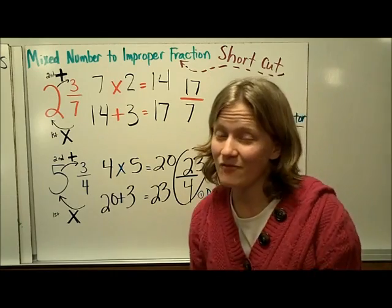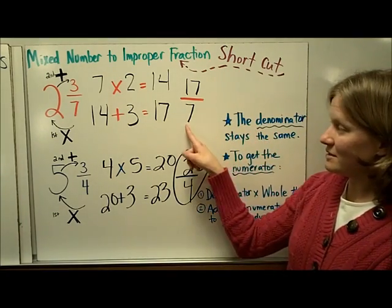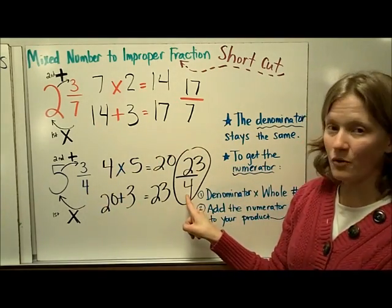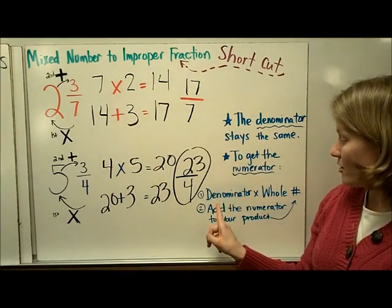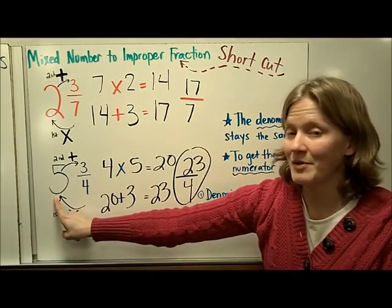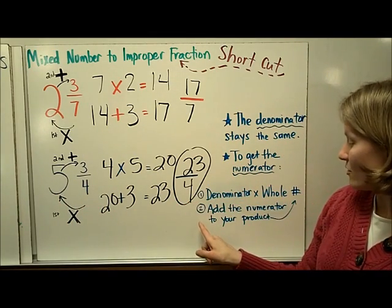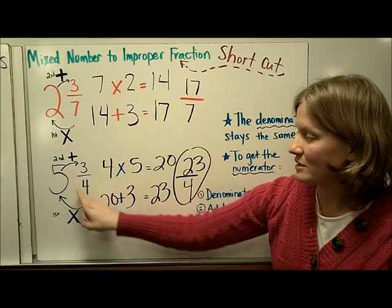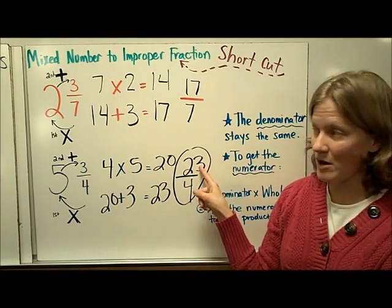To summarize the steps for this shortcut: the denominator stays the same as it already was. In order to get the numerator, you multiply the denominator times the whole number, and then add the numerator to that product. That result becomes your new numerator.